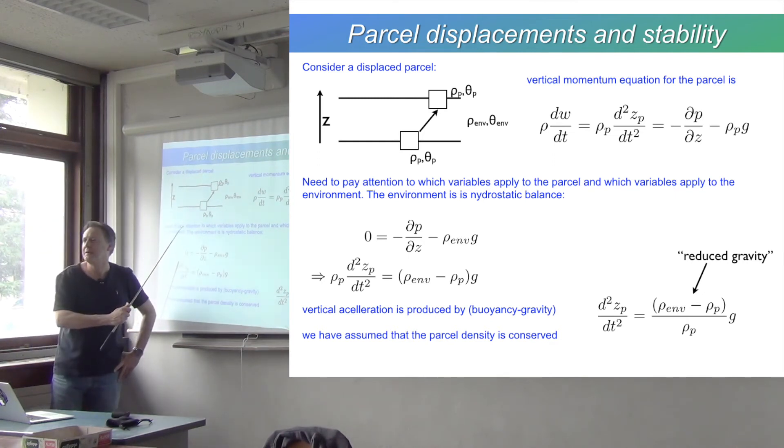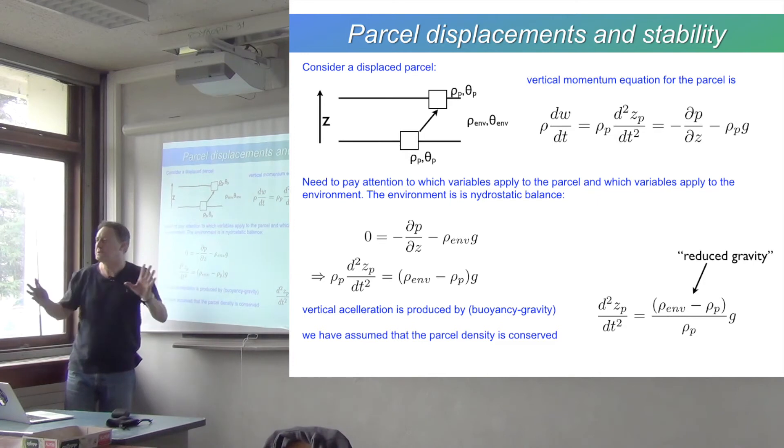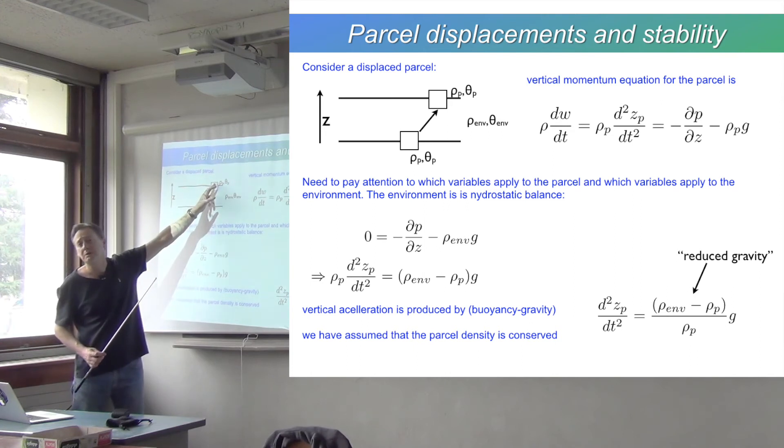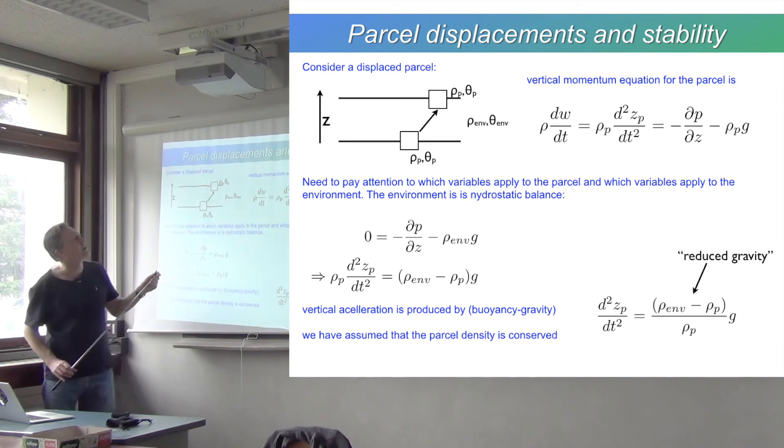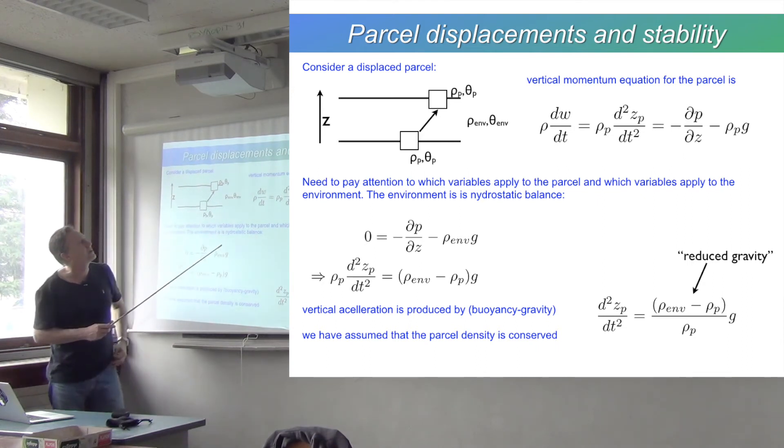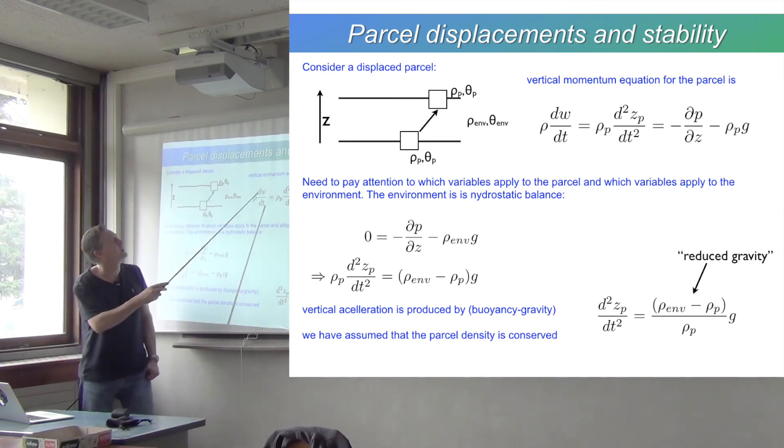If this thing moves suddenly to another level it's not going to suddenly have the same density as the water around it—it's going to keep the same density. If you move it up and it's stably stratified, then the environmental density is more here than there. Move this up and it's going to be heavier than its surrounding—it's going to want to sink back down again. On the other hand, its pressure will immediately equilibrate to its surrounding pressure. It doesn't conserve its pressure as it moves up—pressure will equilibrate at the speed of sound.